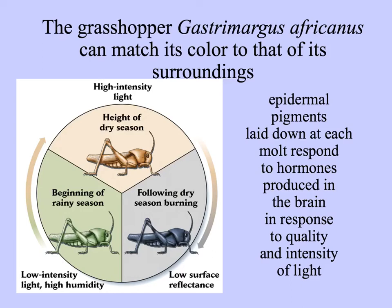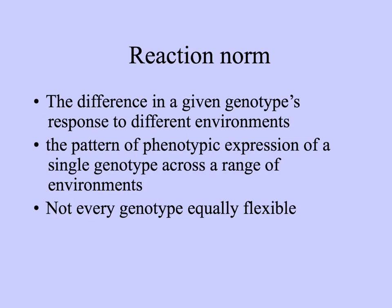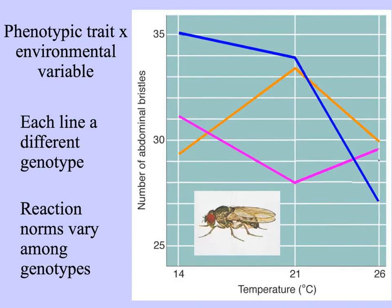This color change occurs because the pigments laid down at each molt — the grasshopper goes through five different instars or developmental stages — respond to the quality and intensity of light, controlled by hormones. With organisms that we can manipulate, it's interesting to look at a given genotype's response to different environments. The pattern of phenotypes you see across a range of environments is called a reaction norm. Not every genotype is equally flexible over this range: here, development of a Drosophila fly over different temperatures shows how many bristles are on the abdomen is determined by temperature in some genotypes but not others.